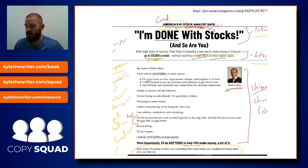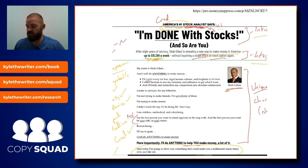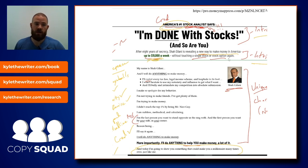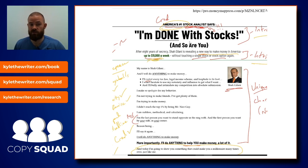Here's another example, again from Money Map. 'America's number one stock analyst says: I'm done with stocks, and so are you. After eight years of secrecy, Shajalani is revealing a new way to make money in America — up to $11,000 a week — without touching a single stock or stock option again.' You don't buy a single stock, and the number one stock analyst says he's done with stocks.